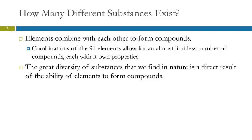I don't think anybody can actually answer this question with a solid number, because for one thing, scientists are making new compounds all the time. So, elements—we talked about there's 91 naturally occurring elements. Elements combine to form compounds.